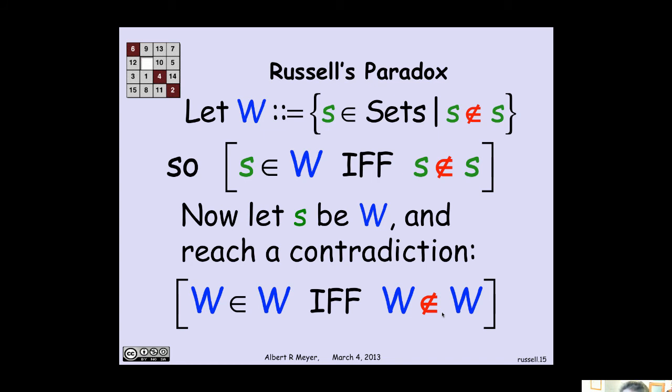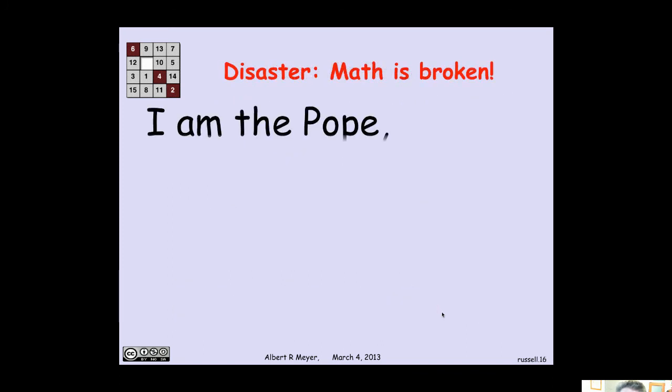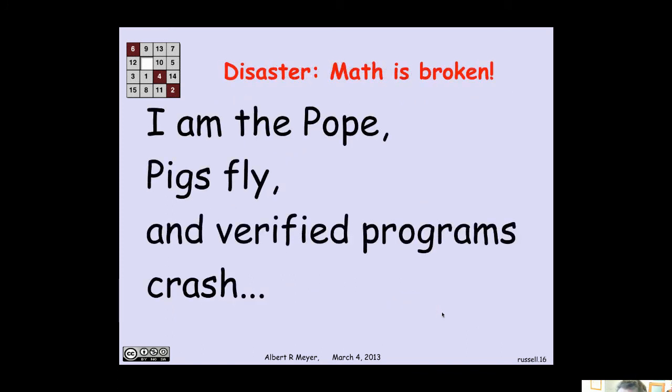Poor Frege. And his book was a disaster. Math is broken. You can prove that you're the pope. You can prove the pigs fly. Verified programs crash. Math is just broken. It's not reliable. You can prove anything in Frege's system because it reached a contradiction. And from something false, you can prove anything.